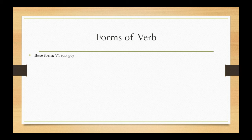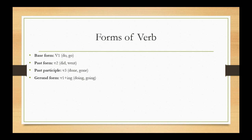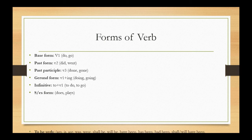Forms of verb: Base form verb 1 - do, go. Past form verb 2 - did, went. Past participle verb 3 - done, gone. Gerund form verb 1 plus ing - doing, going. Infinitive to plus verb 1 - to do, to go.